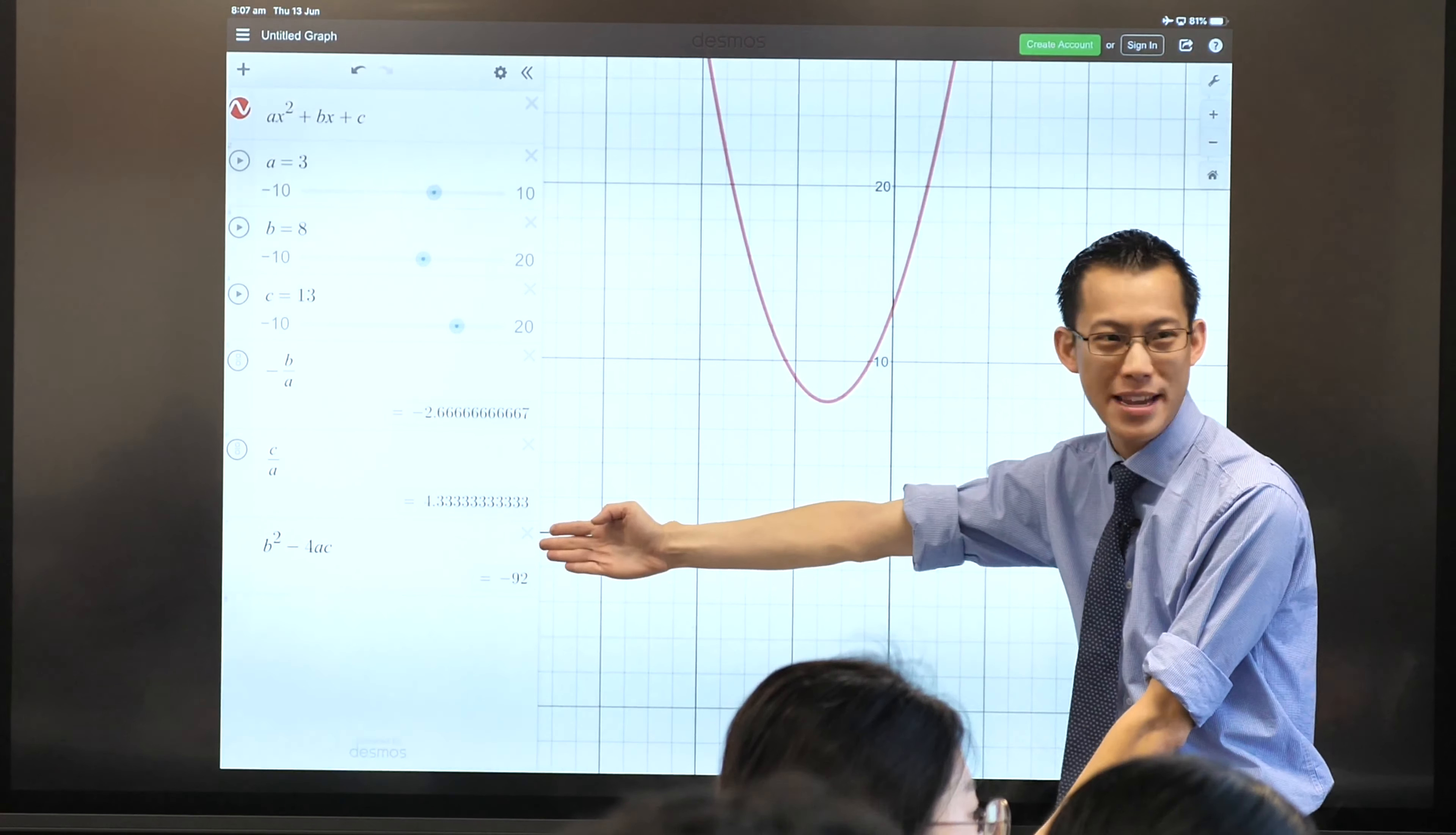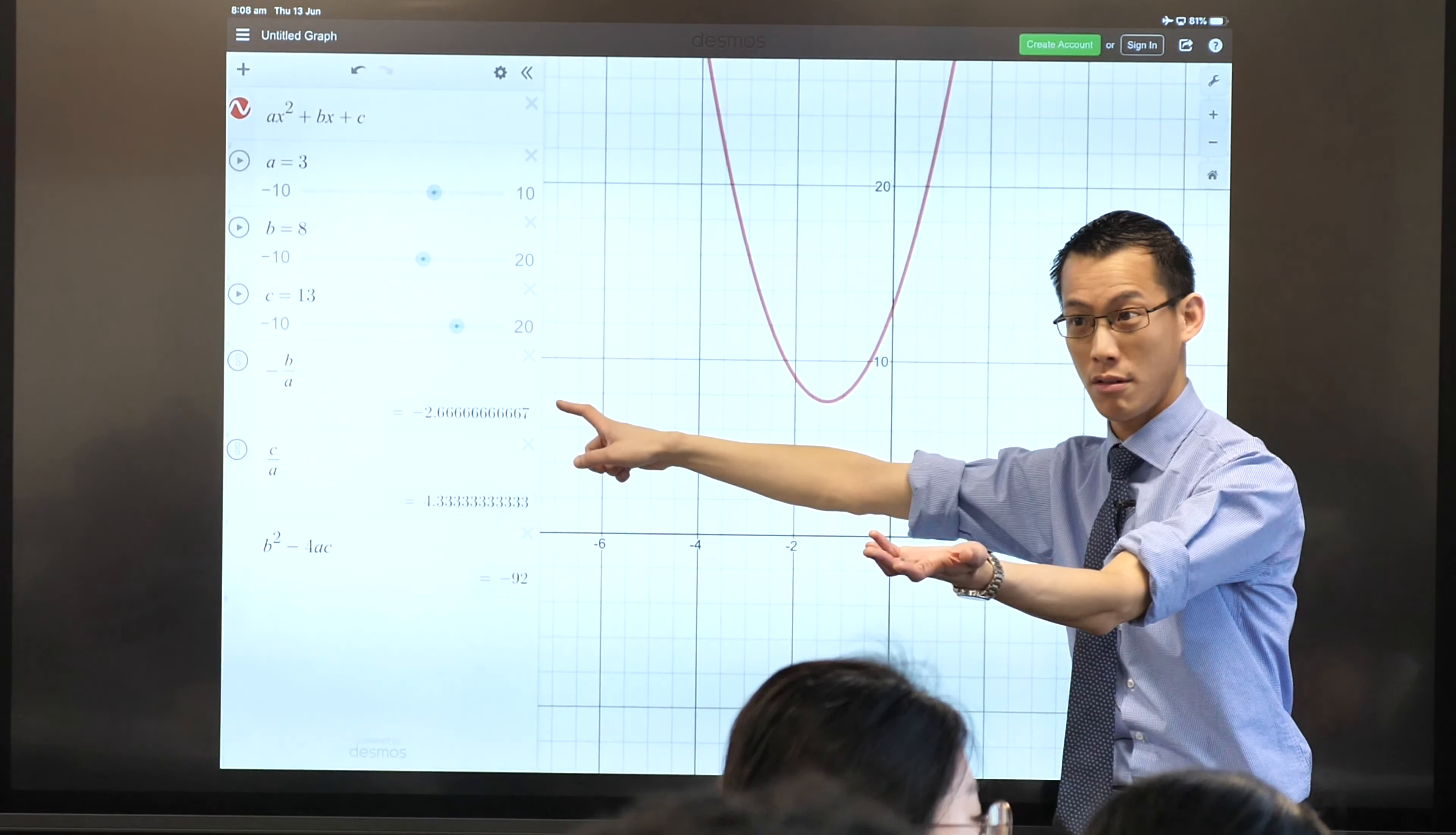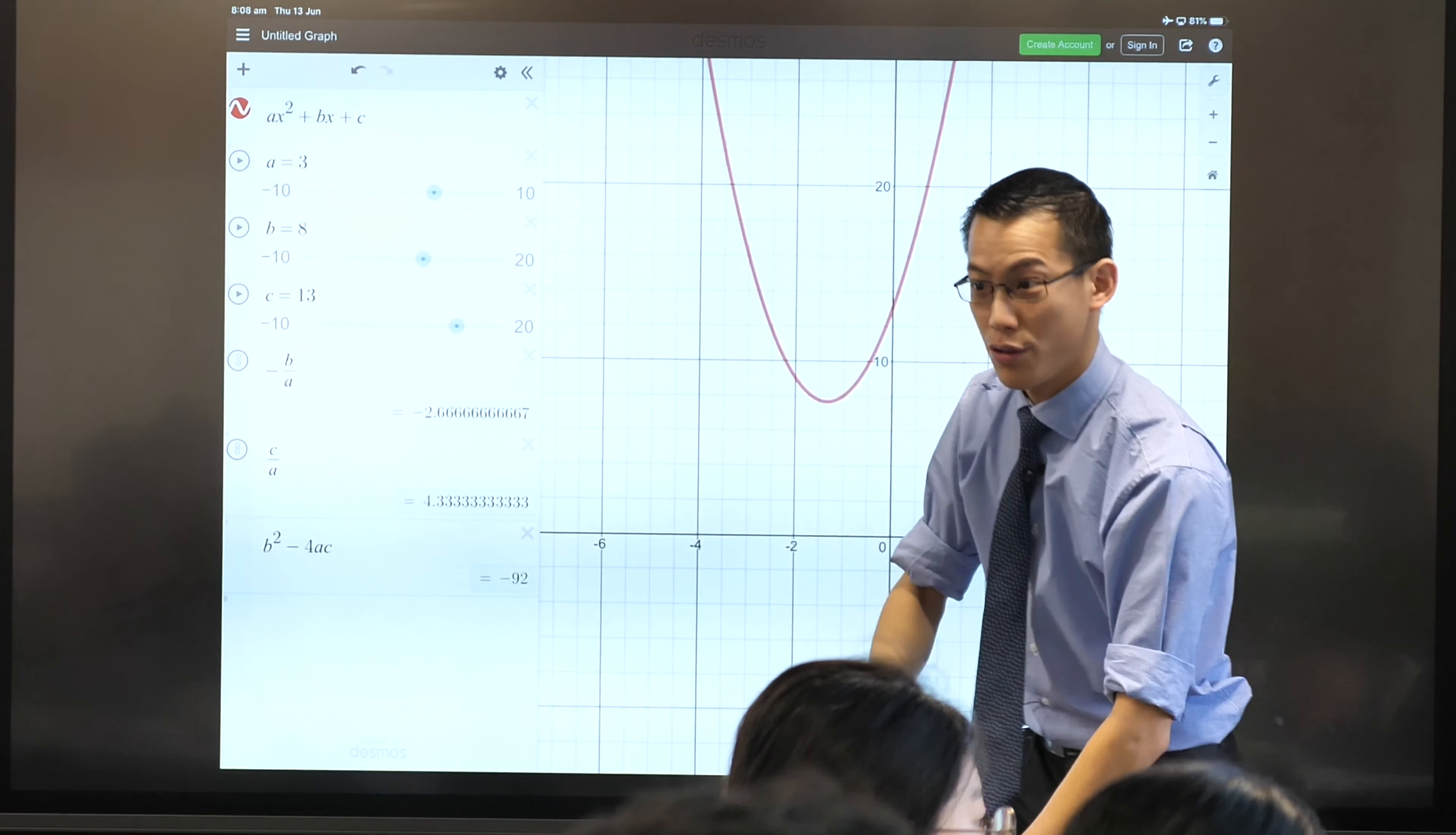And yet, despite there being no zeros, apparently I can still add them and get something sensible, and apparently I can still multiply them and get something sensible. Let me show you why.